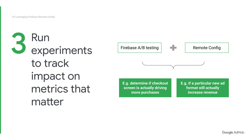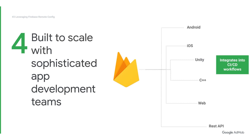Third, Remote Config allows you to run experiments to see the impact of app changes on metrics that matter to you. Remote Config works seamlessly with Firebase A/B testing. You can run experiments to review the impact certain changes have on your key metrics. For example, you can determine if your new checkout screen is actually driving more purchases or if a particular new format increases revenue. This allows you to intelligently grow your app through data-driven decisions and not guesswork.